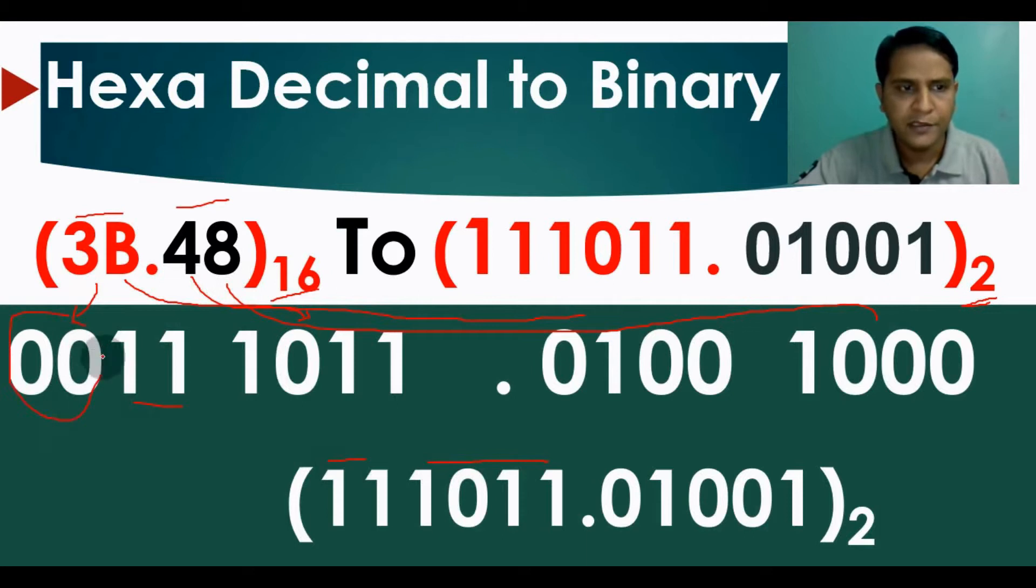So you can ignore this 0. So it becomes 111011 point, and for this you can write 0100.